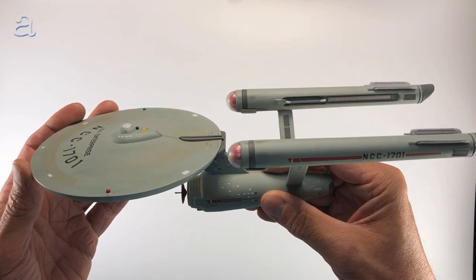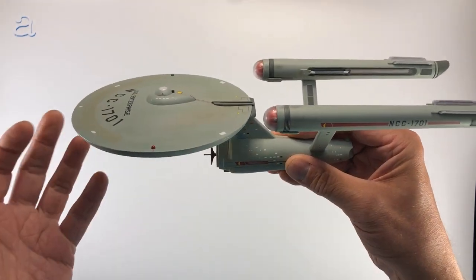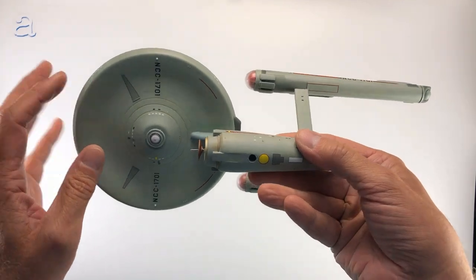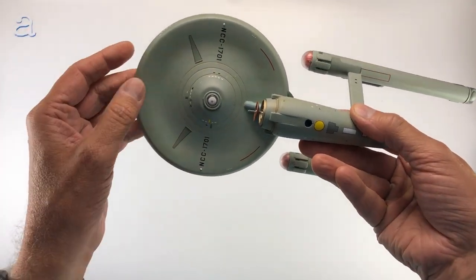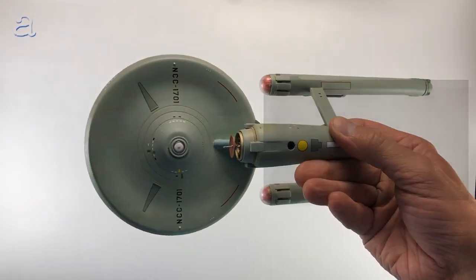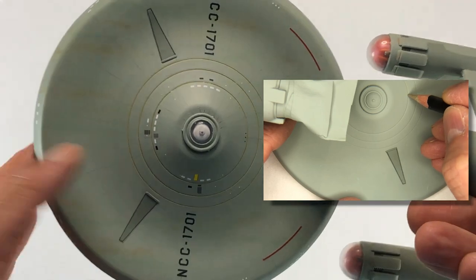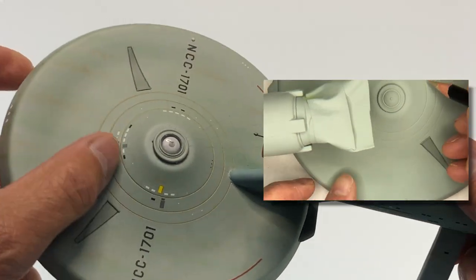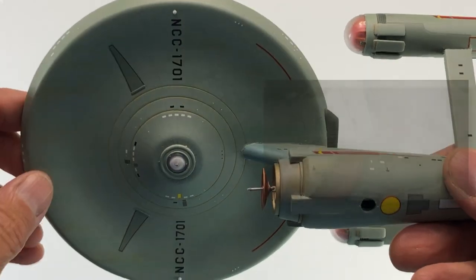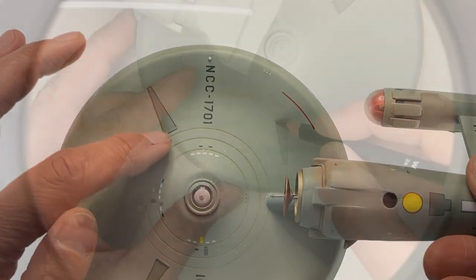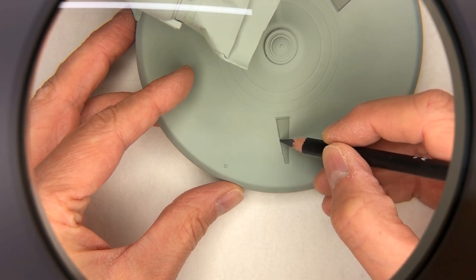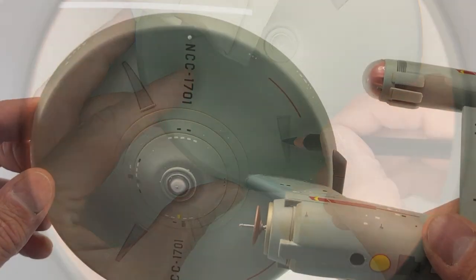A couple of other effects include the little tan rings on the underside of the saucer section. Those I actually applied using just a weathering pencil, which I think turned out really good. It's kind of subtle but I think just the right kind of shade of that golden tan color. I also used the same weathering pencils on the outline of the landing bay covers.